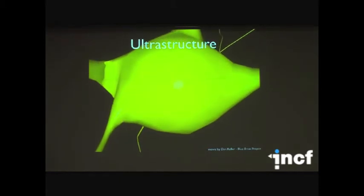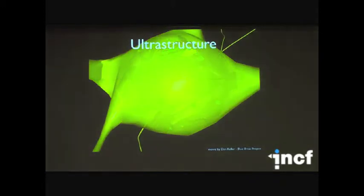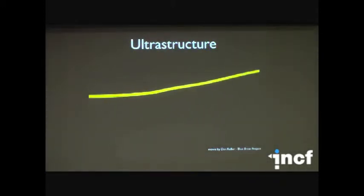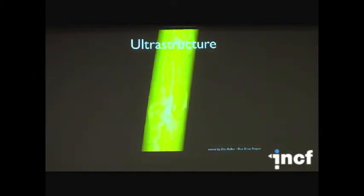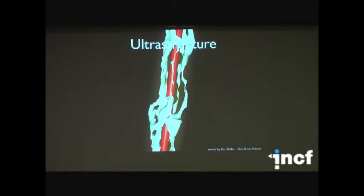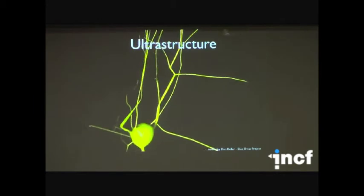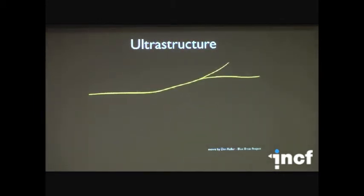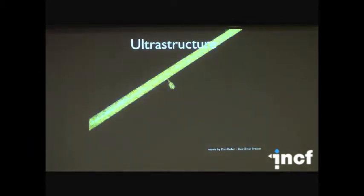This is a model cell created by Dan Keller in the Blue Brain Project, where he's generating 3D meshes and populating them with mesh models of organelles including the Golgi apparatus, the ER, mitochondria, and dendrites. With these 3D meshes you can bring this into MCell and populate it with ions, molecules, and reactions necessary to evaluate how subcellular processes interact within the geometry of individual cells.